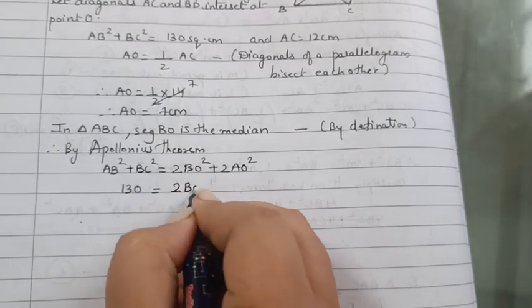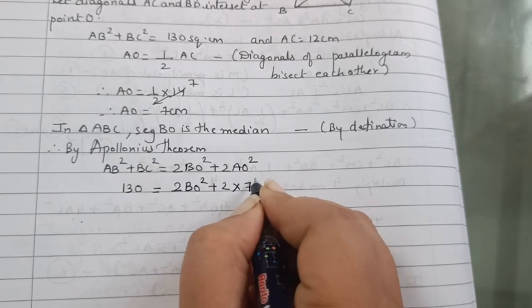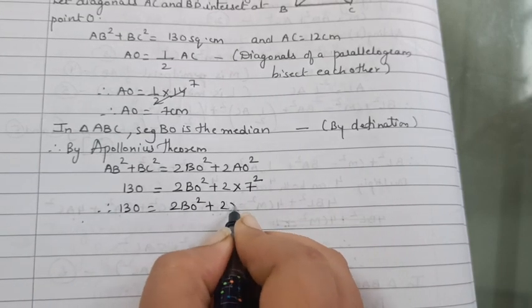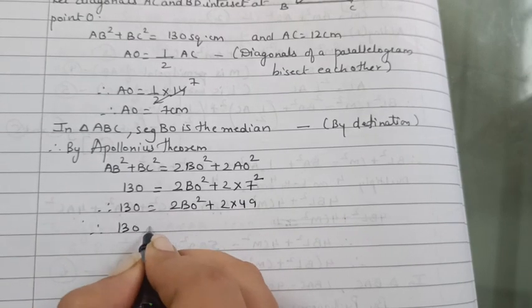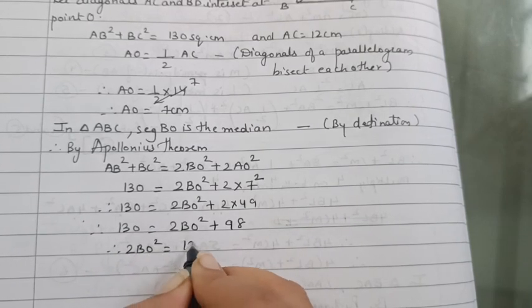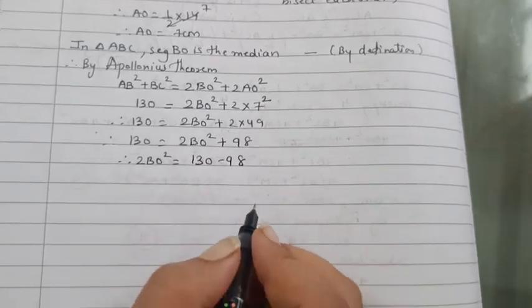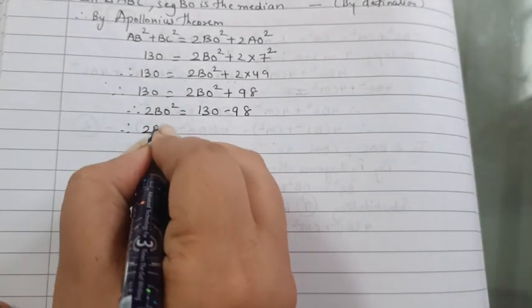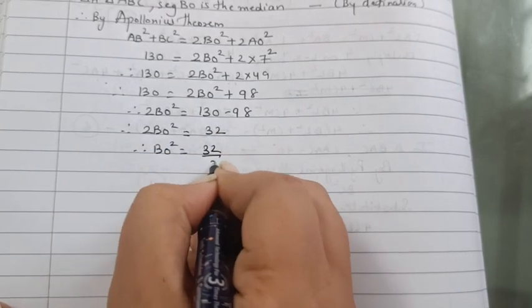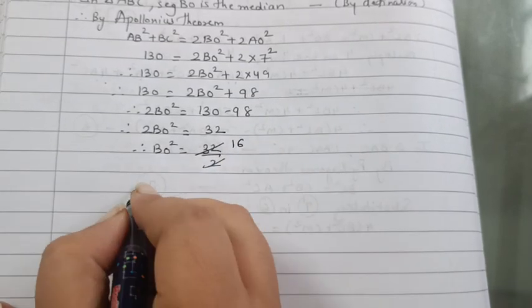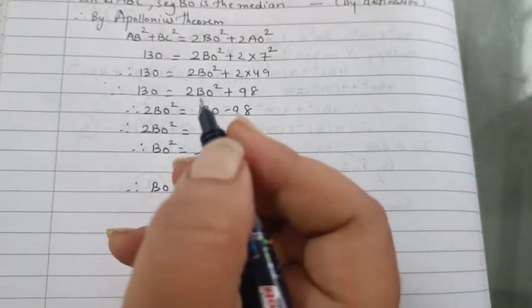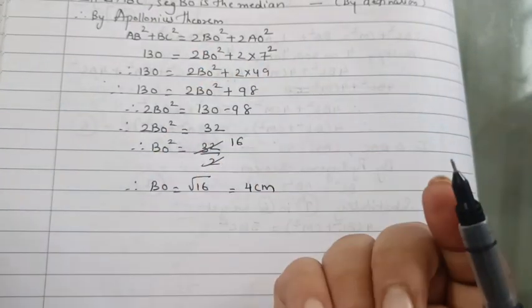AB² + BC² is equal to 2BO² plus 2AO². It is 130. Therefore 2BO² is equal to 32. Therefore BO² equal 16. Therefore BO is equal to 4 cm.